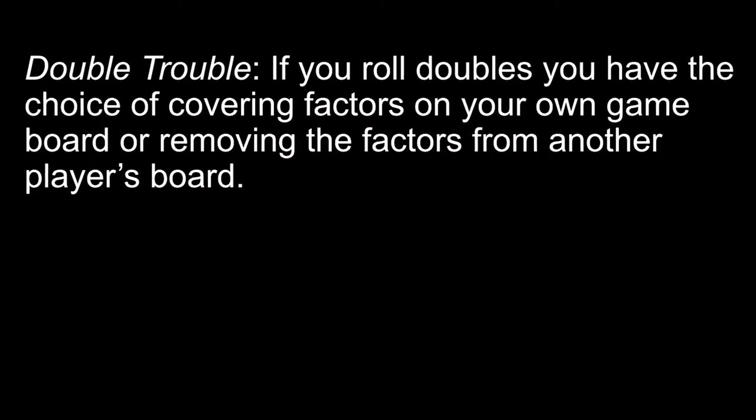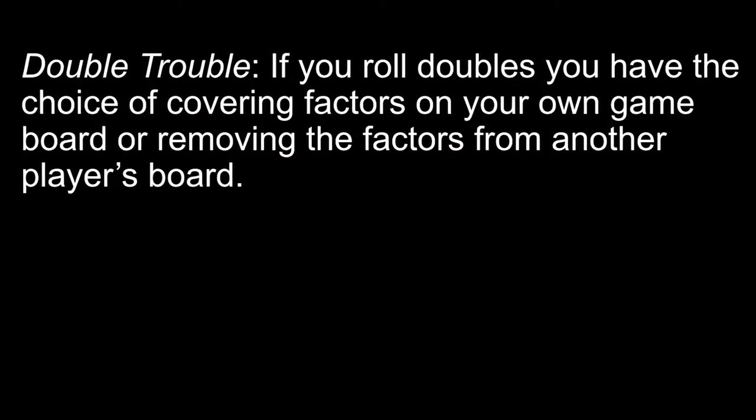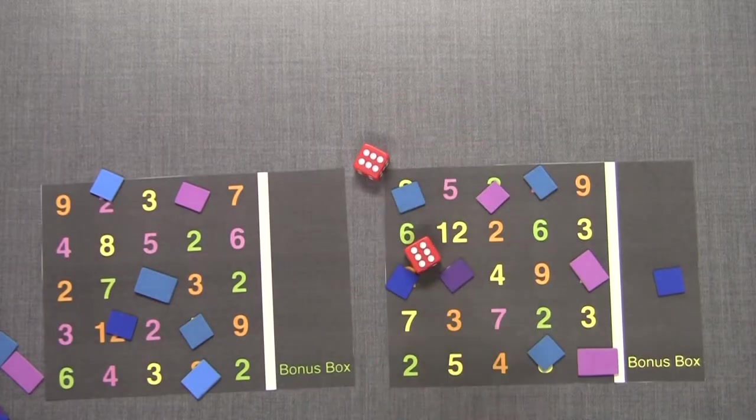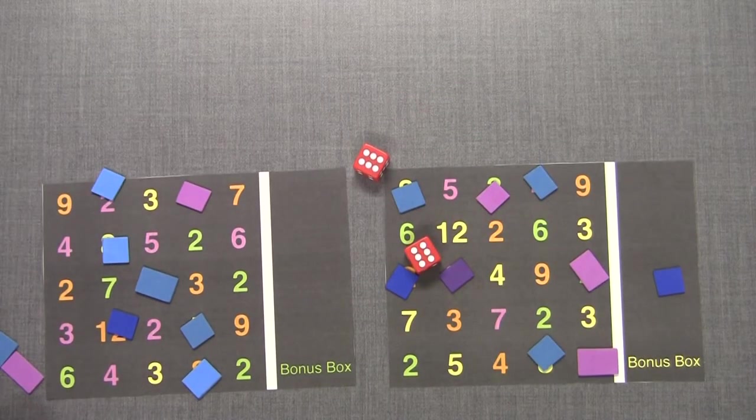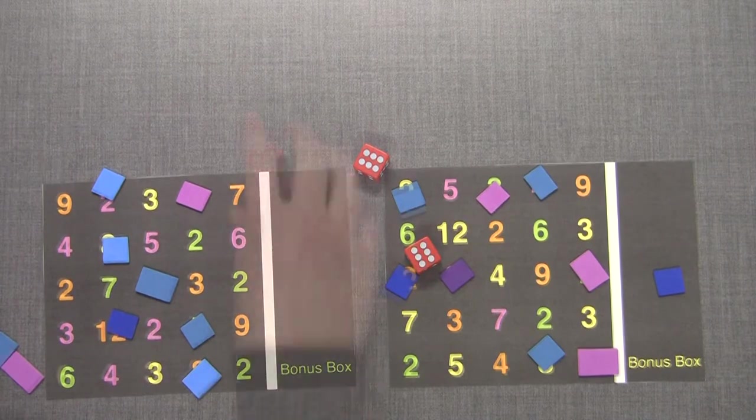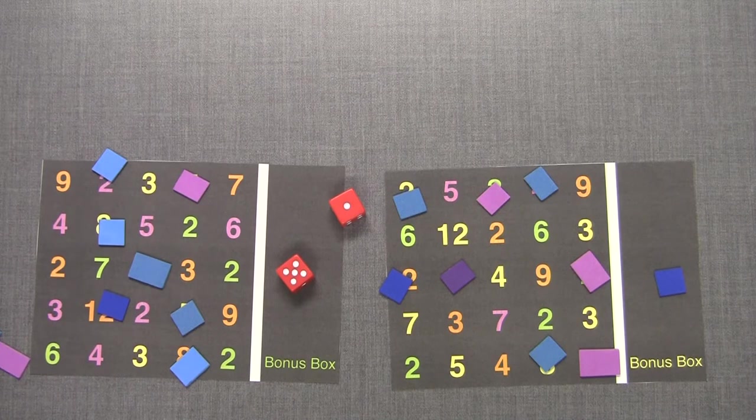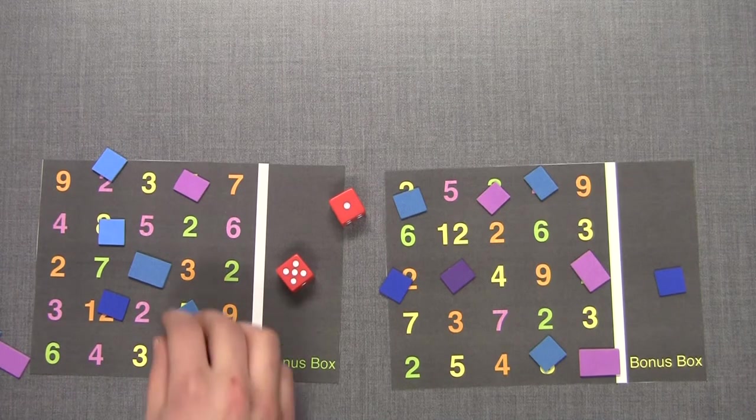Another variation is double trouble. If you roll doubles you have the choice of covering the factors on your own game board or removing the factors from another player's game board. So if you roll doubles, roll again until you don't roll doubles and cover up the factors on your board or remove the factors of the number from an opponent's game board.